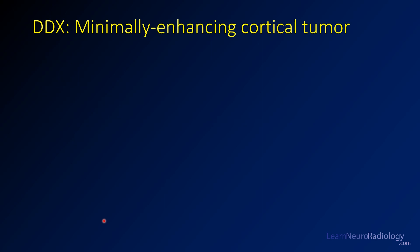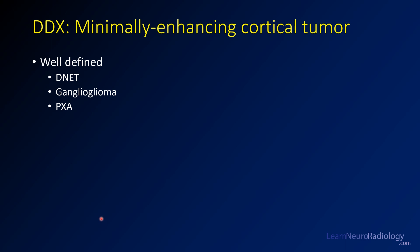Minimally enhancing cortical tumors have a short differential. These tend to be well-defined tumors like DNET, ganglioglioma, and PXA. There's a lot of overlap between the appearance of these and you may not be able to tell the difference. If you have ill-defined cortical tumors, then you've got to think about low-grade gliomas like grade 2 and grade 3 astrocytomas, or oligodendrogliomas.